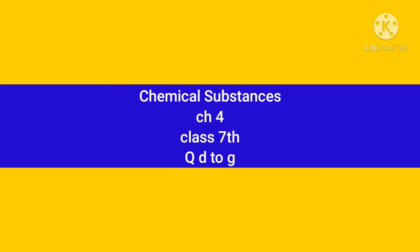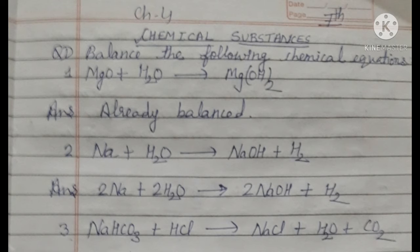Chemical Substances, Chapter 4, Class 7, Question D2 to G. Question D: Balance the following chemical equation.